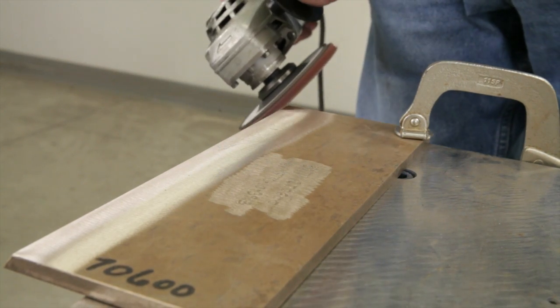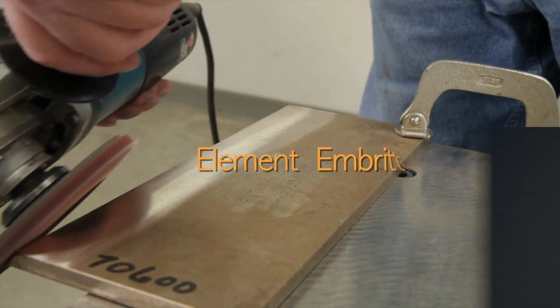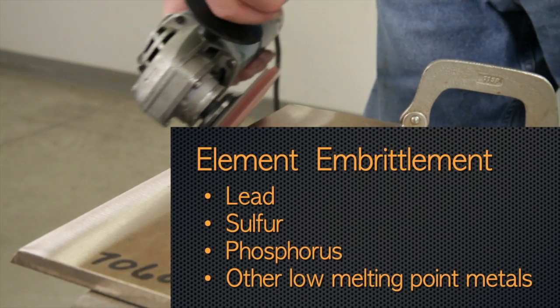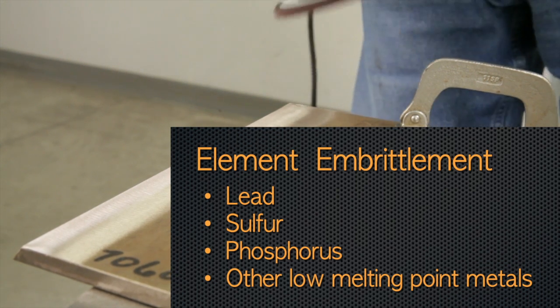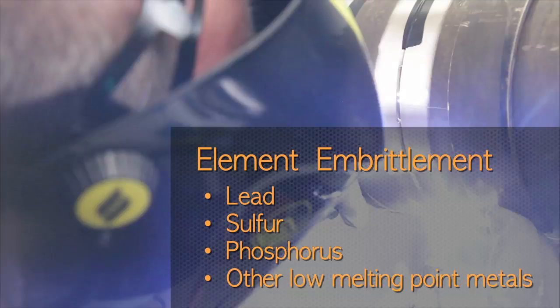If present on the surface before welding, they can cause embrittlement and cracking. The elements that are particularly harmful are lead, sulfur, phosphorus, and other low-melting point metals.